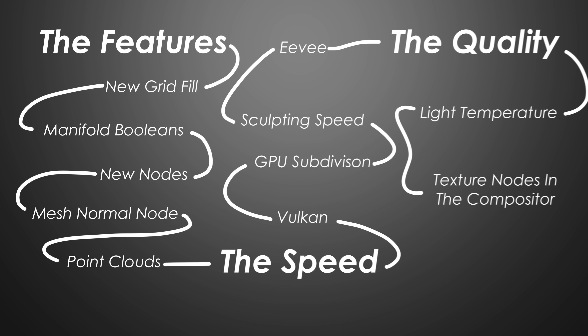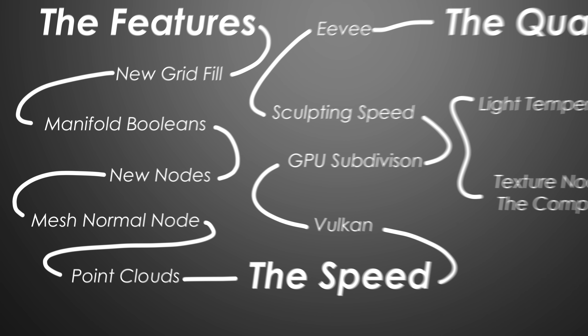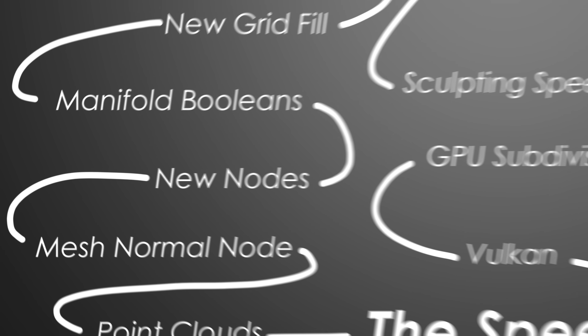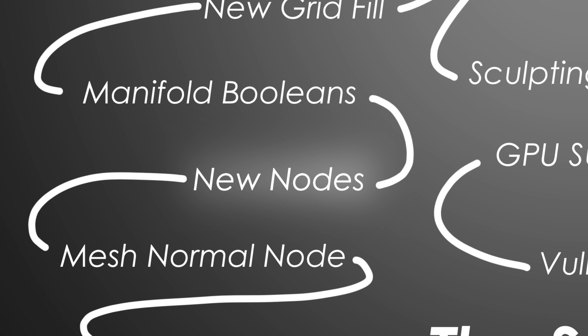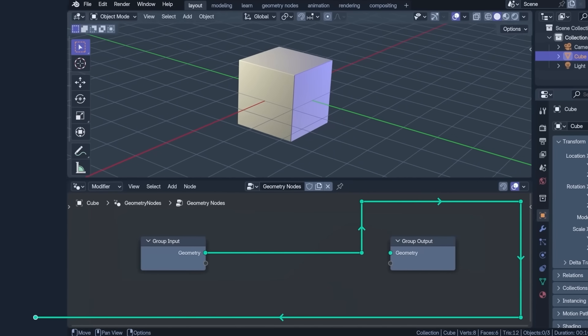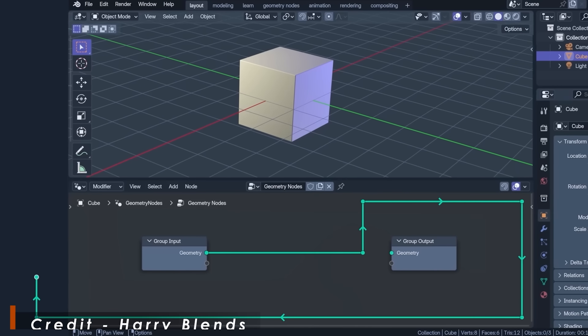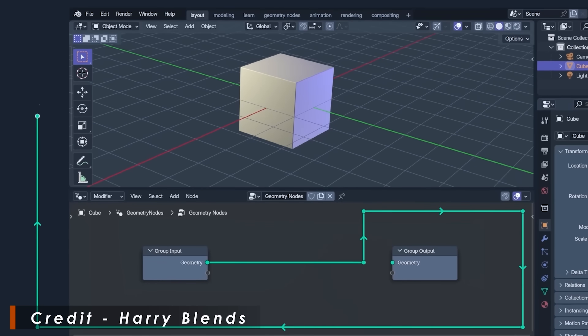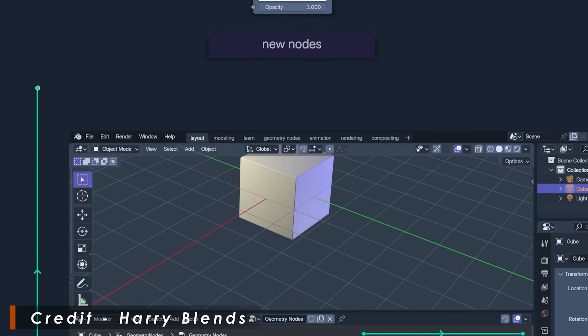That brings us to the next feature set added in Blender 4.5: the new nodes. To learn more about them, I interviewed Harry Blends, who does Blender's official node overview with each release. How is 4.5 going to be different? How much has been added in 4.5 that makes it so crazy?